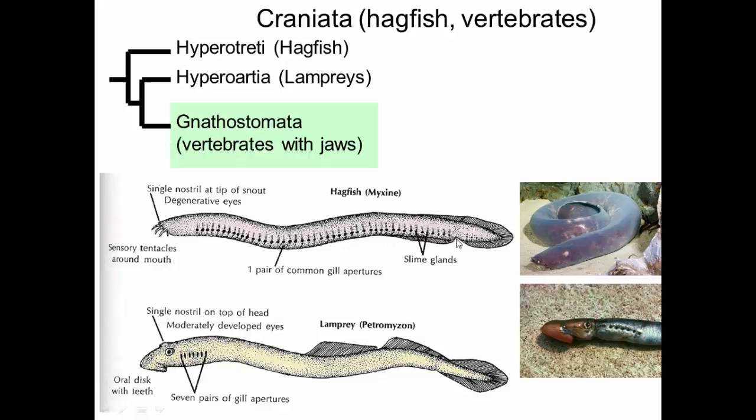They have slime glands. If you've seen Ghostbusters, they have the power to produce large amounts of mucus incredibly quickly, in the same way that the ghost Slimer did in that movie. If you actually bring these up on a boat, you have to be very careful because once they dry out, if you accidentally get any water on them, there's basically an explosion of mucus from these guys. So that's hagfish, or Hyperotreti.